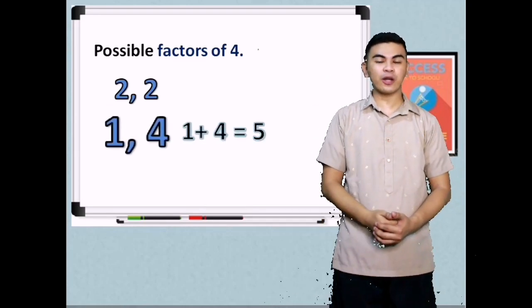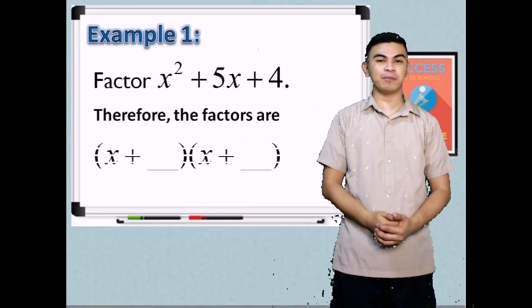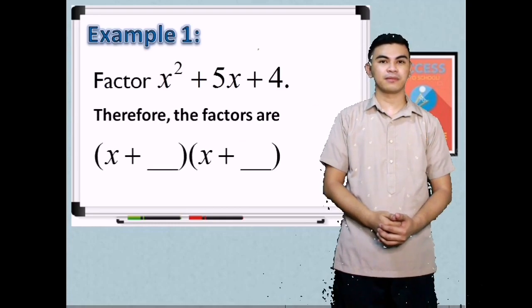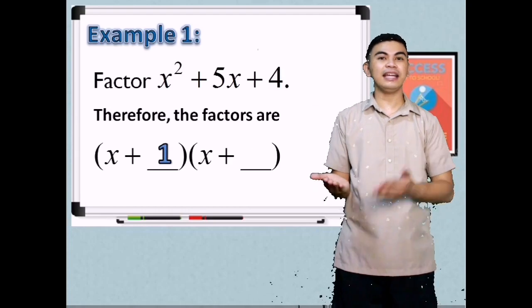Therefore, the factors of x squared plus 5x plus 4 are x plus 1 and x plus 4.